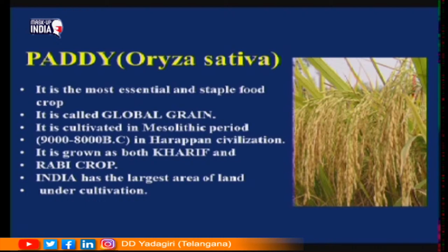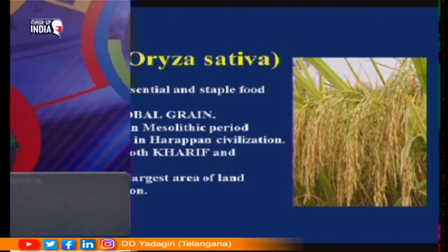The cultivation of paddy started in the Mesolithic period, during the Harappan civilization. It is grown as both a Kharif and a Rabi crop. Countries like China and Japan also grow this rice crop. India has the largest area of land under paddy cultivation, though China and Japan produce more due to their modern techniques and different practices.